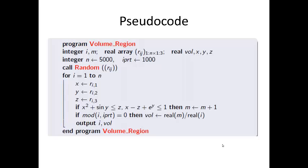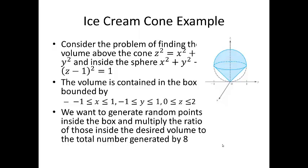Finally, let's take a look at an example involving ice cream. Everybody loves ice cream, but you probably won't so much after we finish this example. Consider the problem of finding the volume of the cone z = √(x²+y²) inside the sphere x² + y² + (z-1)² = 1.